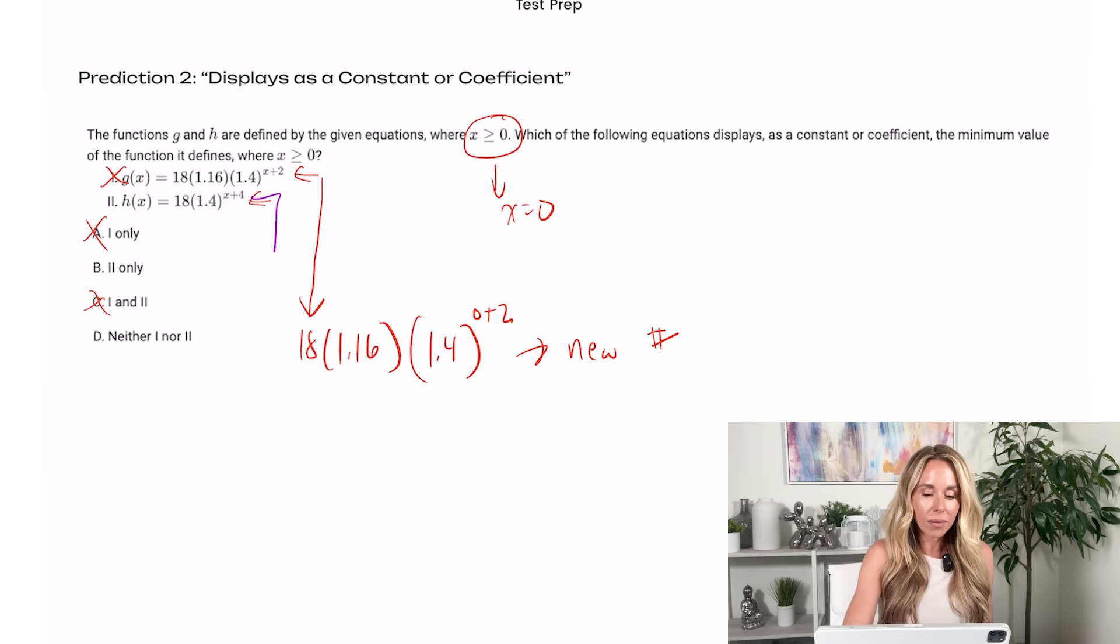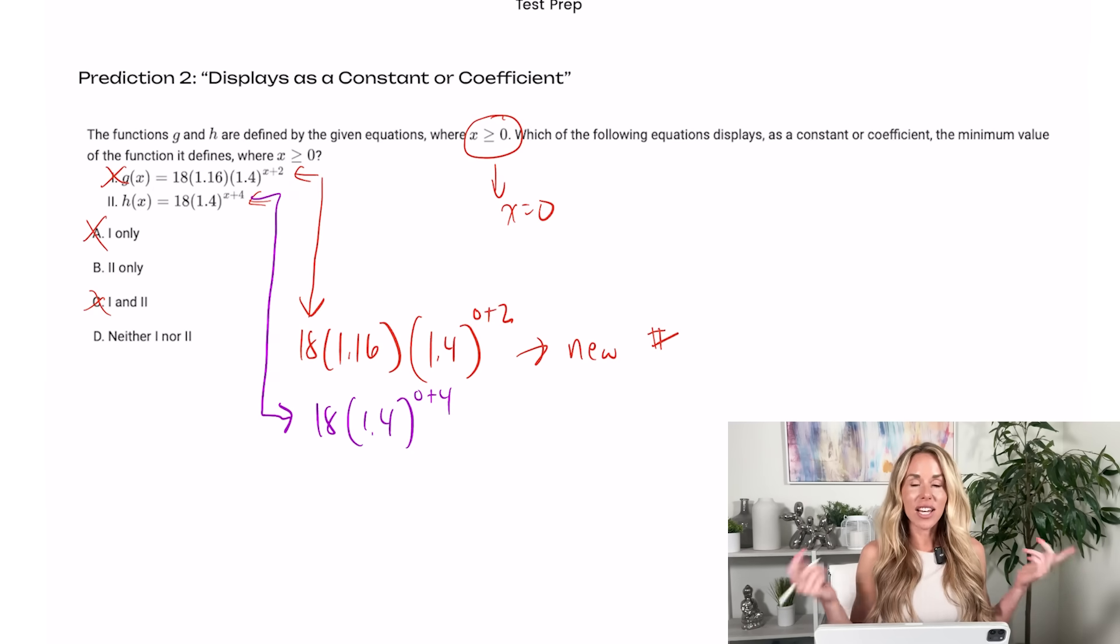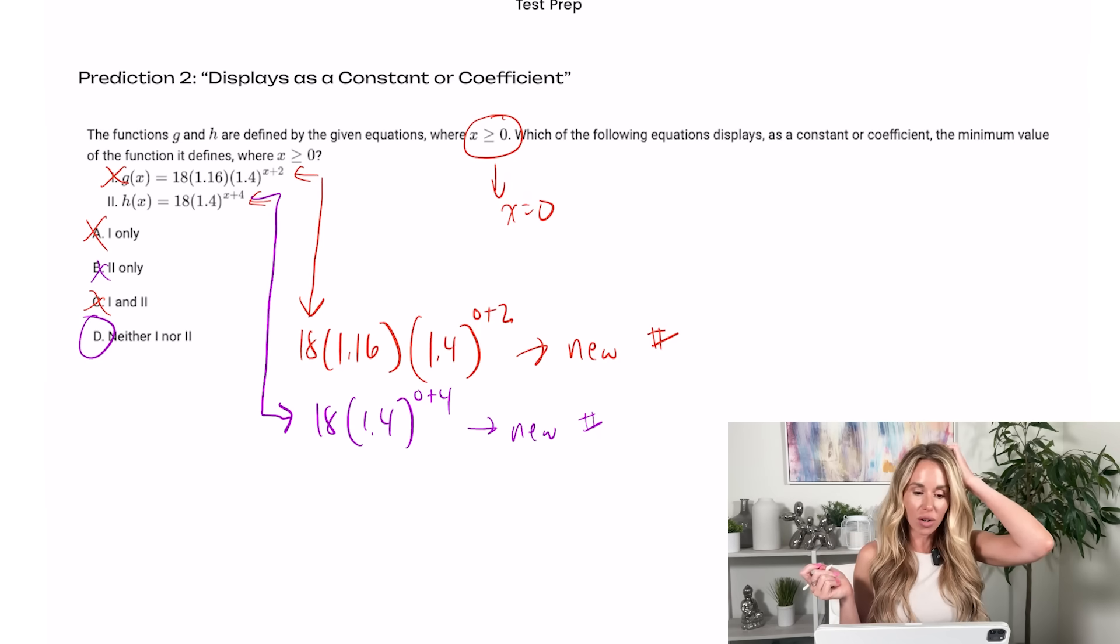Now let's go to the second one. So if I put in zero for x into the second one, I'm going to have to take 1.4 to the fourth power, then multiply that by 18. I'm also going to get a new number that isn't originally visible in the equation. So both of them are out. So the answer is d, neither 1 nor 2.